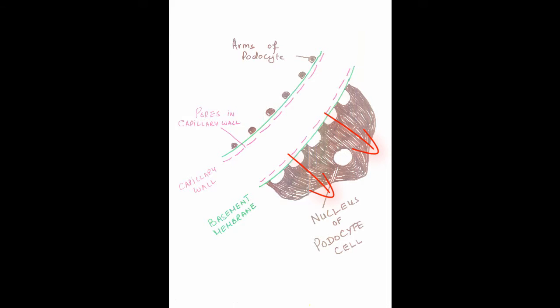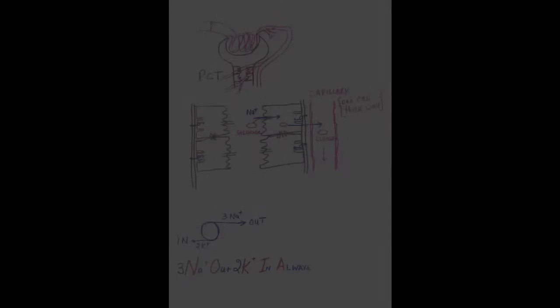As the glomerular filtrate now trickles down, it is going to pass through the PCT. The PCT is the area where the maximum volume is going to be reabsorbed. The cells lining the PCT are very well adapted for their function.